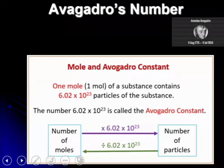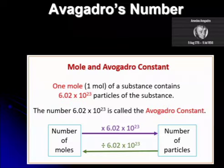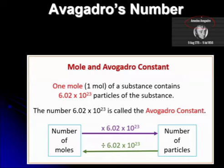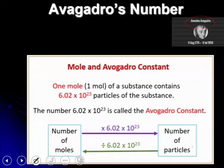This number was put forward by a guy called Avogadro, born 9th of August 1776. It's also known as Avogadro's number. Not avocado — I've seen students refer to it as avocado, which is the pear! One mole of any substance contains Avogadro's number, which is 6.02 × 10²³. I'm going to change the word 'things' to 'particles' — so one mole contains 6.02 × 10²³ particles.